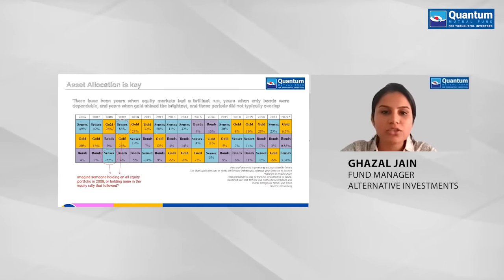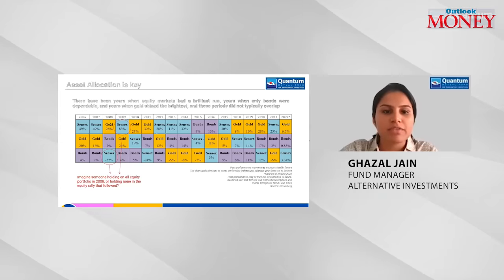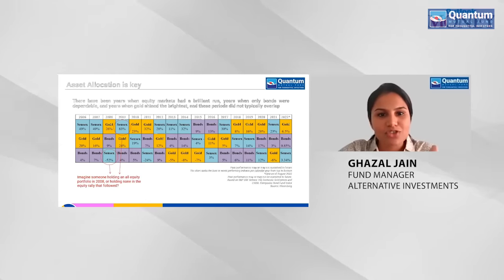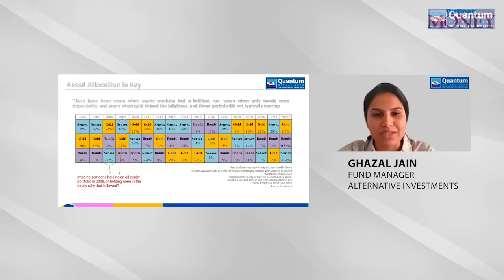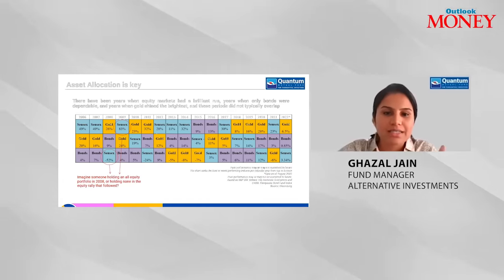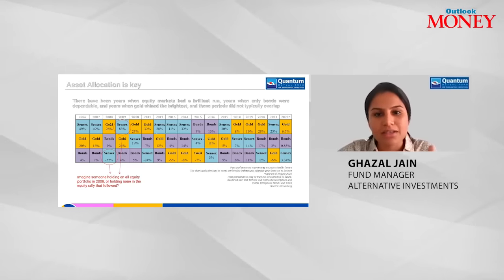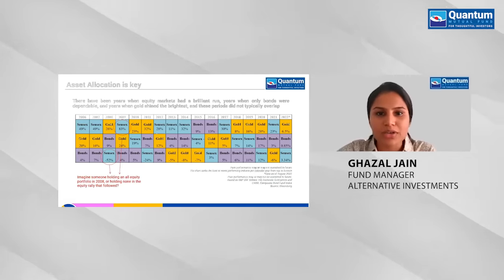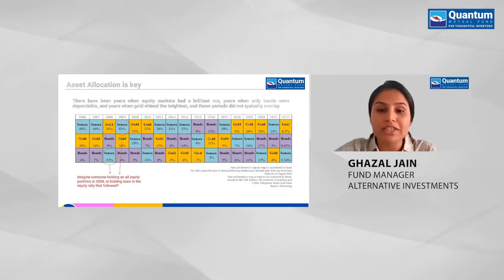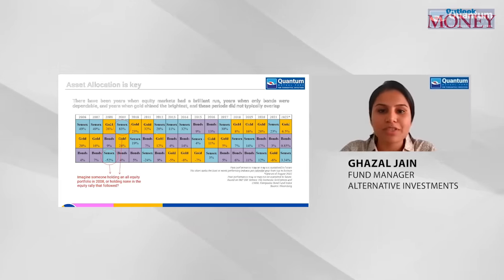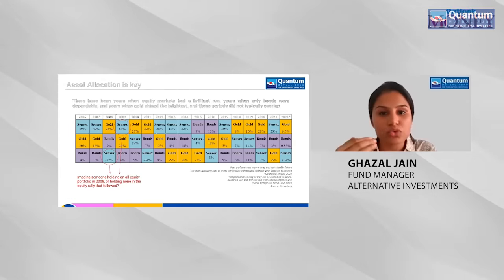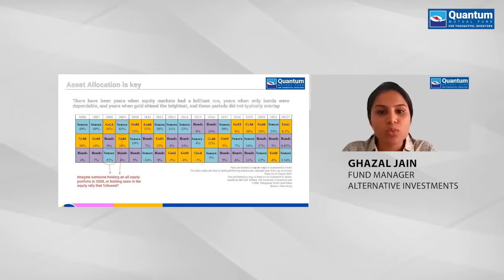Here we map the returns of these three mainstream asset classes from best to lower performing for each calendar year. As you can see, each asset class moves up and down in cycles because they have different risk and return characteristics and respond differently to economic conditions. There could be years when equities do very well, and years when gold does well — these periods typically don't overlap. That's why it's important not to be invested in just one asset class, as it could go through a bad year or two.